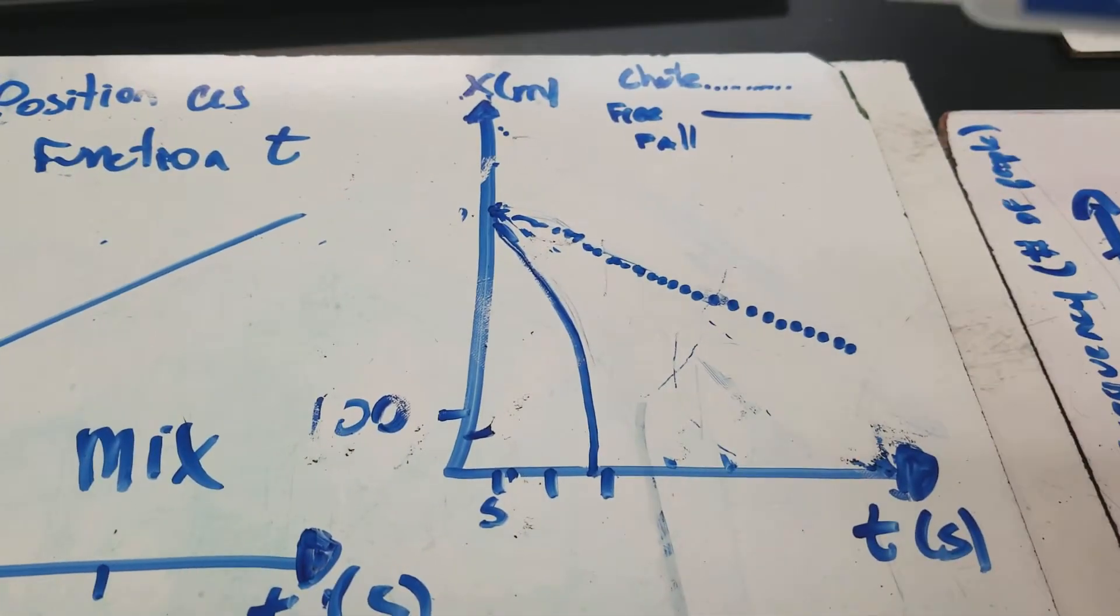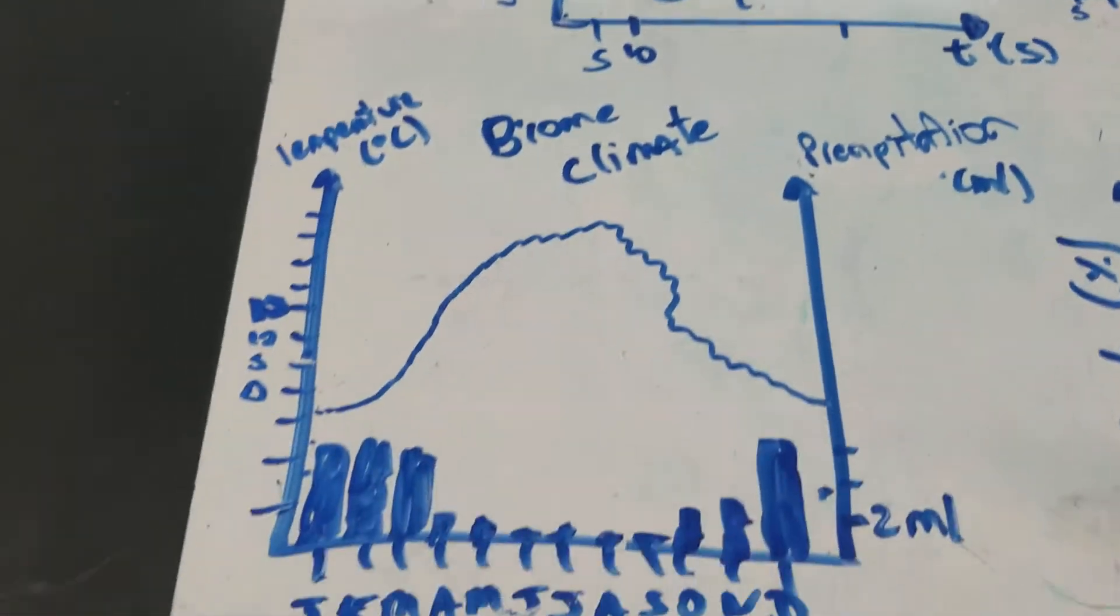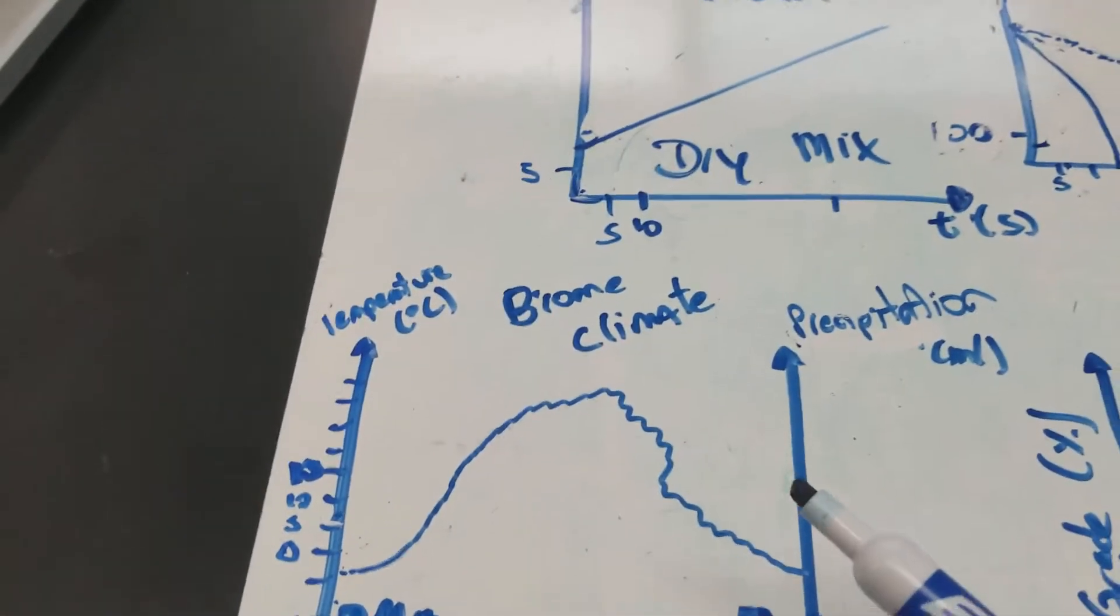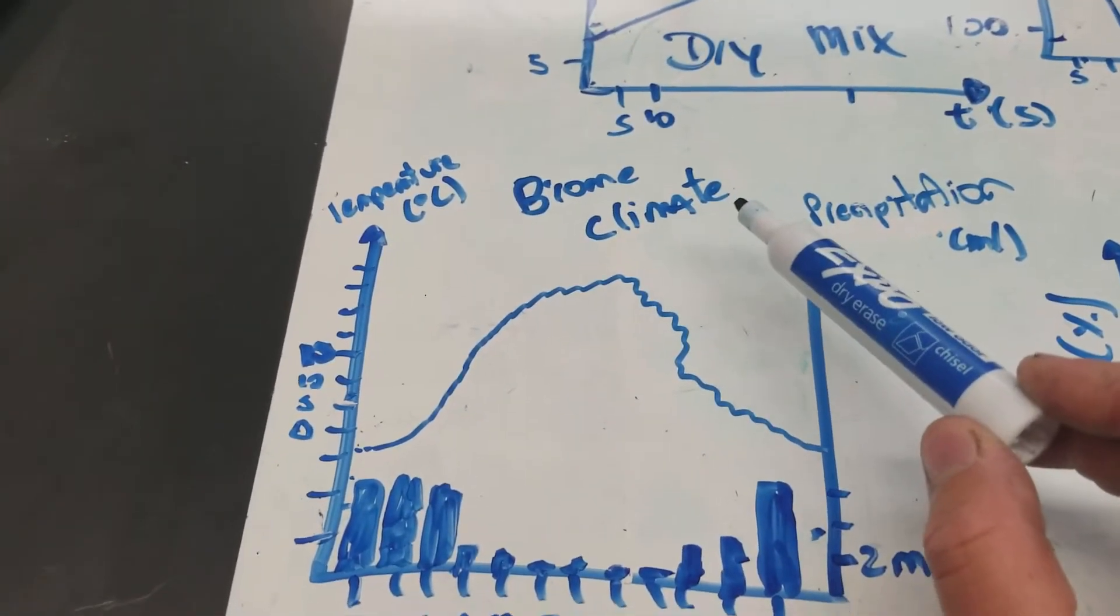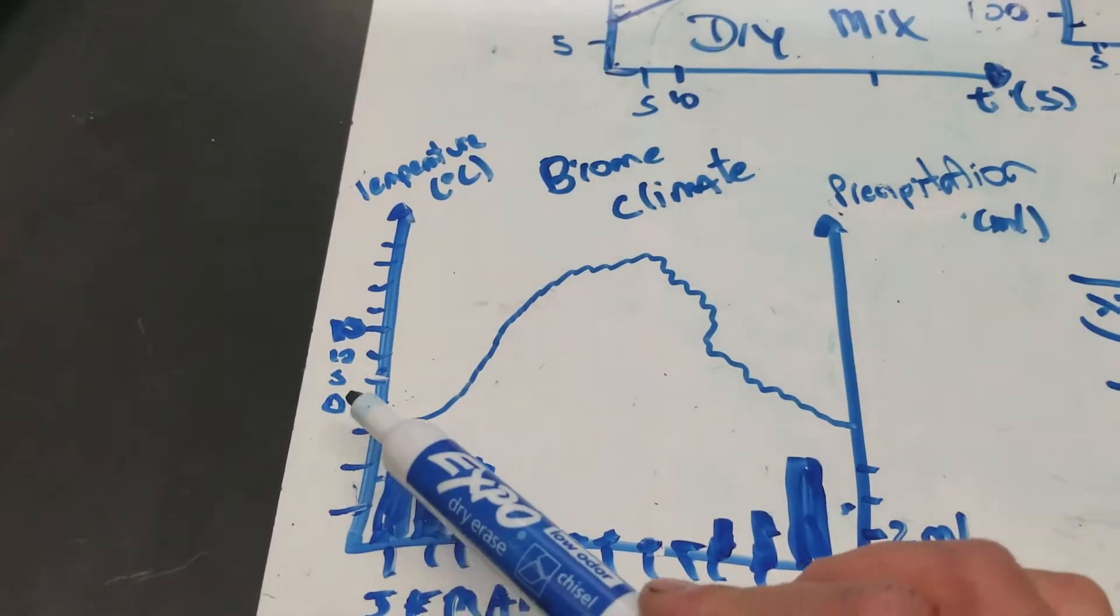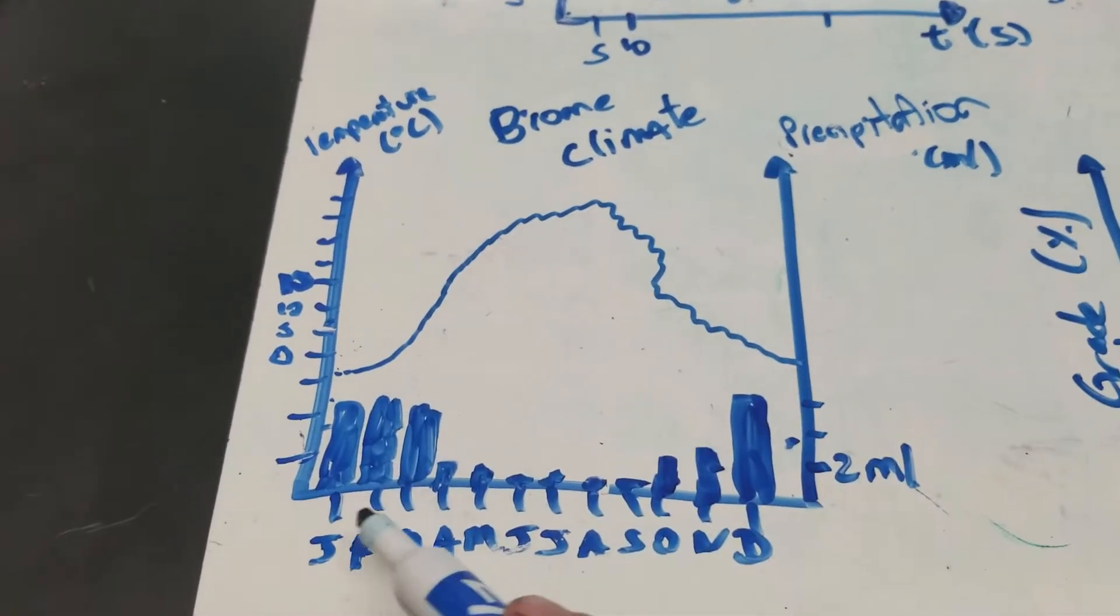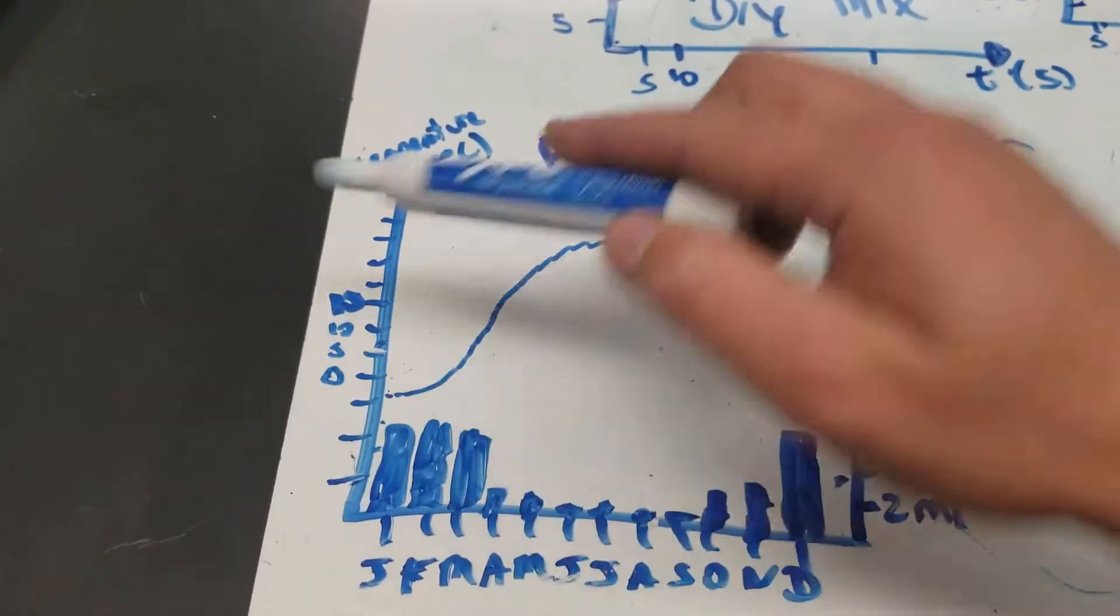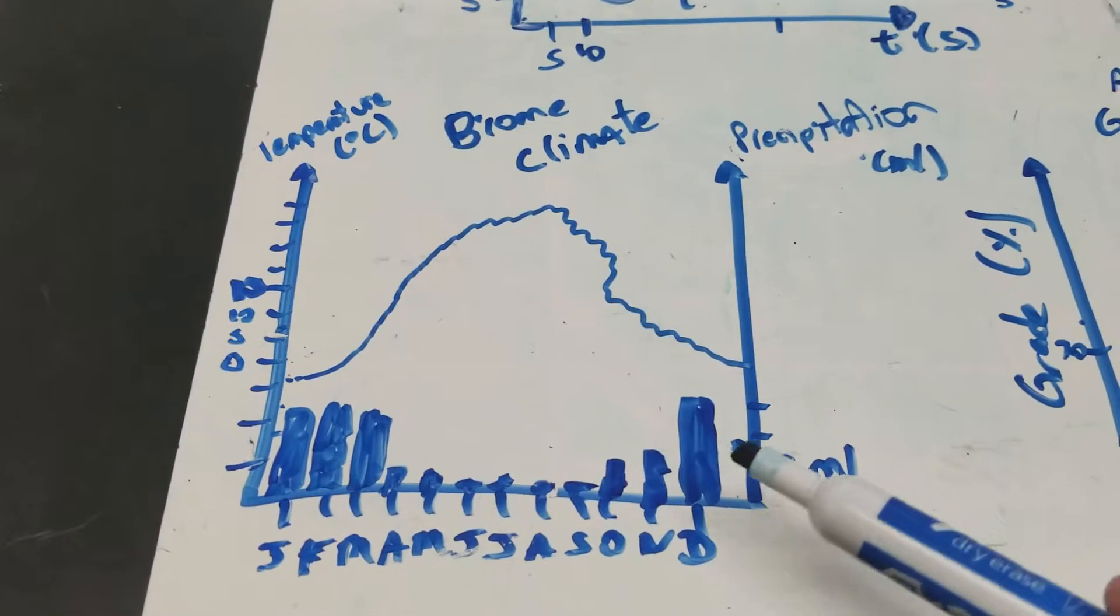So you're going to use those a lot as well. So you can even have line graphs with two Y-axes. Now, these are rare. You don't see them very often. But, for example, in biology, this is a biome climate graph where you have temperature on the left axis and precipitation on the right axis. And the precipitation is being represented by the bar graphs while the temperature is being represented by a line graph. So you can see both at work over here.